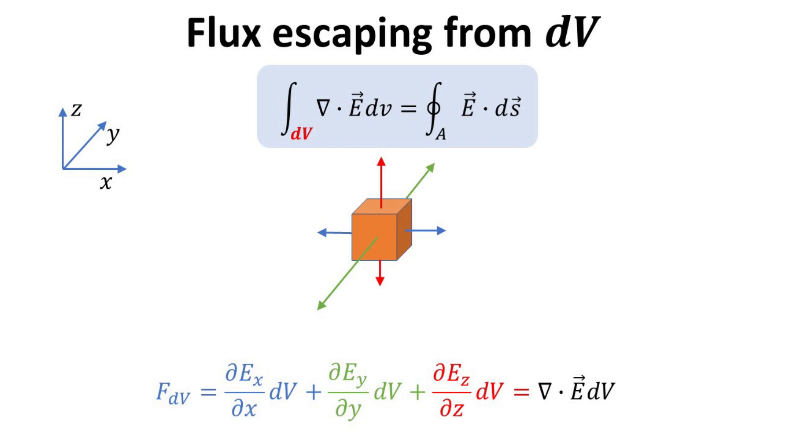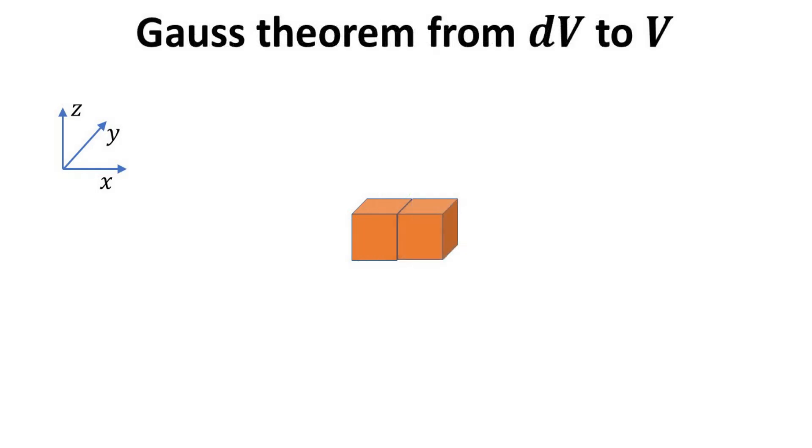Let's imagine combining two elemental volumes as shown. The total divergence will then be the sum of the divergence from each elemental volume. However, since these two elemental volumes share a common surface, the flux from one element would negate that from the other element at that common surface. In other words, the flux that escapes from one volume through this common surface would have to enter the other volume. Thus, there is essentially no net flux that escapes from the combined volumes.